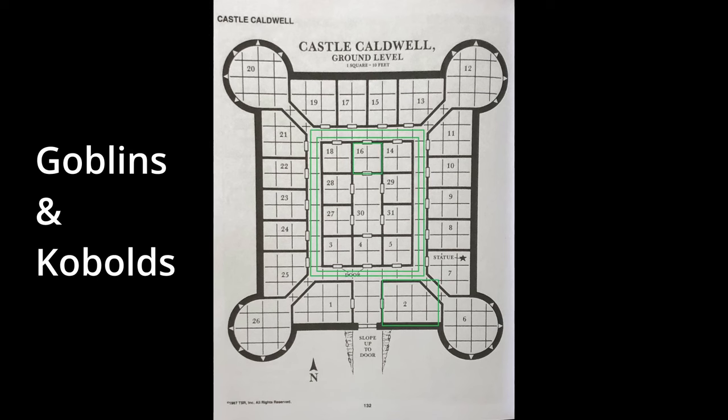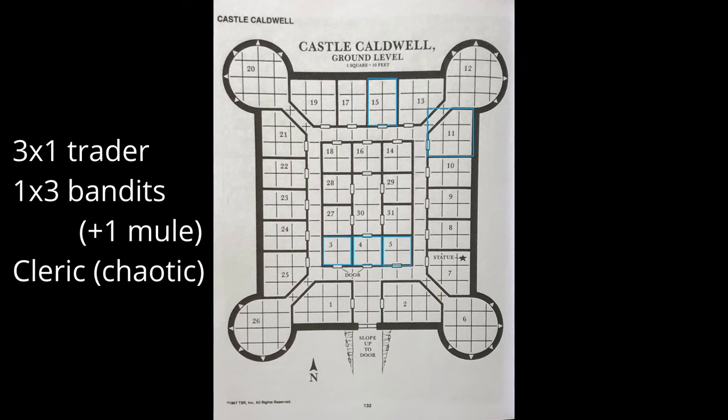The goblins are found either patrolling the corridor, in room 2 squabbling over some coins, or in room 16 relaxing. These goblins don't really seem to interact with the rest of the inhabitants. Rooms 3, 4, and 5 are the residences of three different merchants who appear to know each other, but we don't know anything about their mutual relationship or how they interact with the rest of the inhabitants. There are also bandits in room 15 and a cleric in room 11 presented as a possible ally, but their relationships with the others are unexplained.